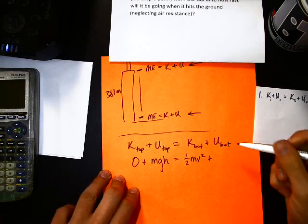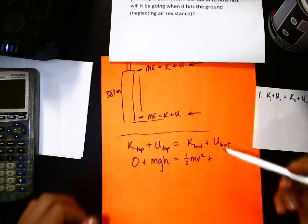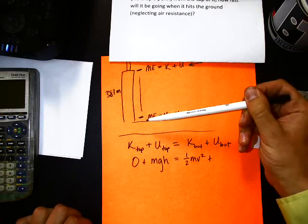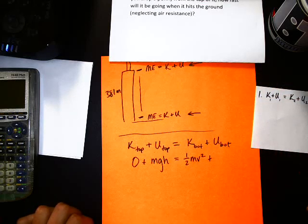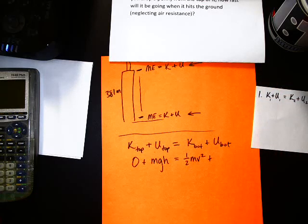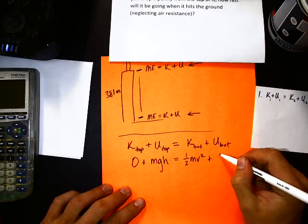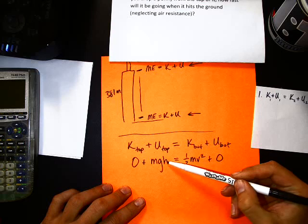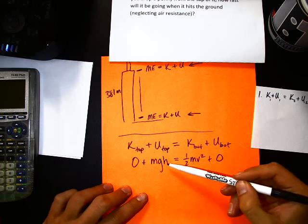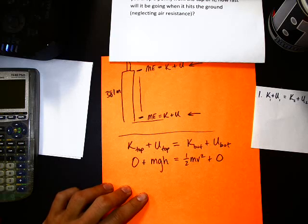That is equal to, now, kinetic energy at the bottom. Is there kinetic energy at the bottom? Is it moving? It's about to hit the ground, it is moving very, very quickly. Yes, there is kinetic energy at the bottom. So, how do we determine kinetic energy? Looking at our notes, again, we have one-half M, V squared. So one-half times the mass times the velocity squared.